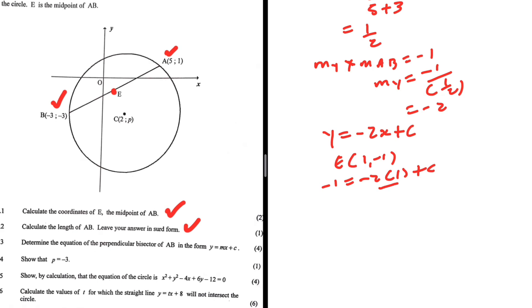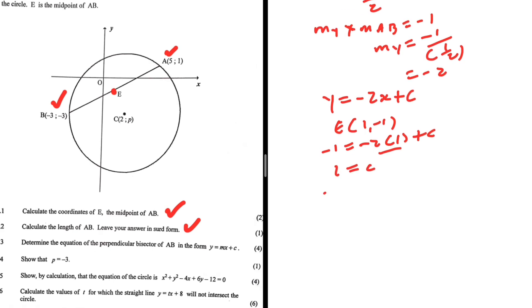So minus 2 — taking that to the left-hand side, we have minus 1 plus 2, giving us 1 equals C. So Y equals minus 2X plus 1. If we substitute 1, we do get minus 1, so we can verify the coordinates of E from that equation. Our answer appears correct. That is 4.3.